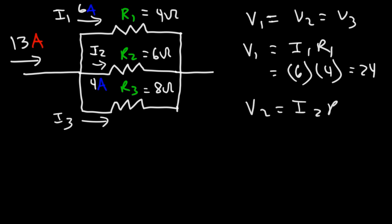V2 is going to be equal to I2 times R2. V2 is 24, R2 is 6. So 24 divided by 6 gives us a current of 4 amps for I2, which is what we have.